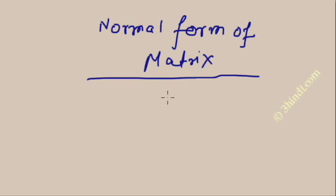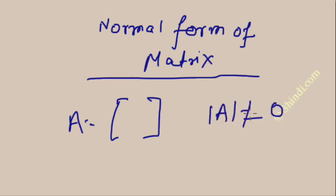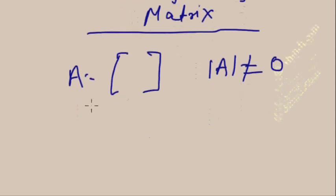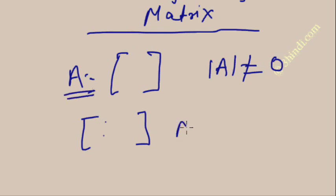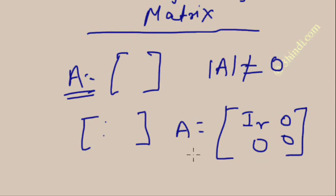Hello, in this video we will study more features of matrices. First of all, I will explain what is the normal form of a matrix. Suppose A is any matrix of which the determinant is not zero. This matrix A can be converted by elementary transformation — you can transform the rows and columns by elementary transformation and convert A into the form: I_R, 0, 0, 0.